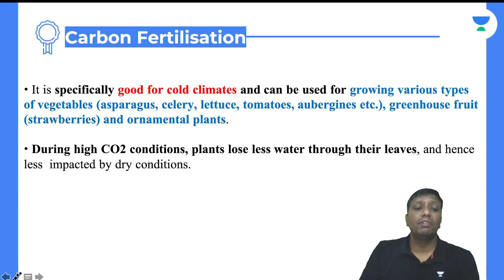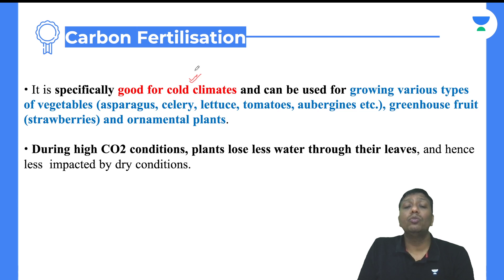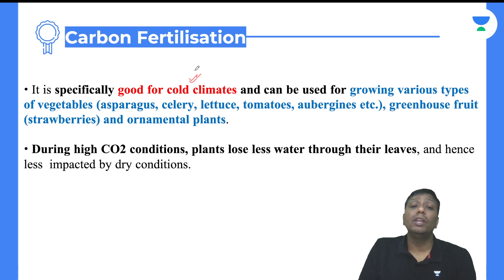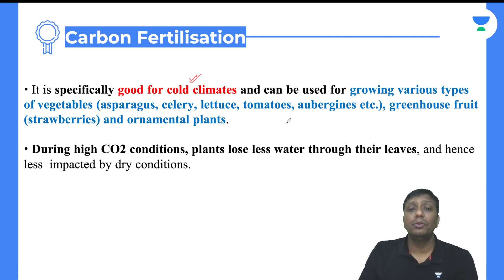This is also observed through carbon fertilization: whenever atmospheric CO2 level increases, overall temperature rises, so many plants in cold climate areas get more benefit in productivity. For example, the carrot in cold climates takes two years as a biennial plant, but wherever temperature is more, carrot grows in one year. Similarly, growing various types of vegetables like asparagus, celery, lettuce, tomatoes, greenhouse fruits like strawberries, and ornamental plants — they all grow faster.